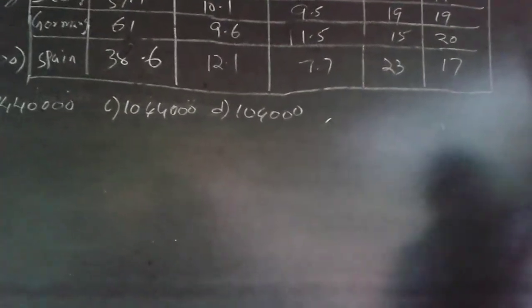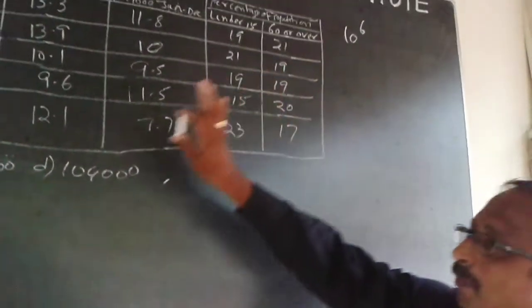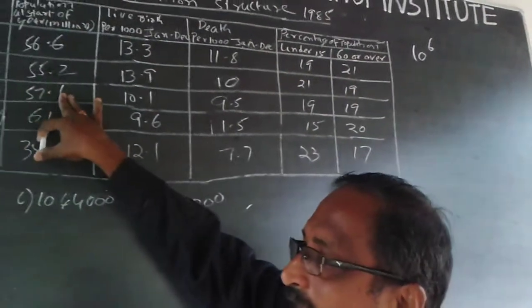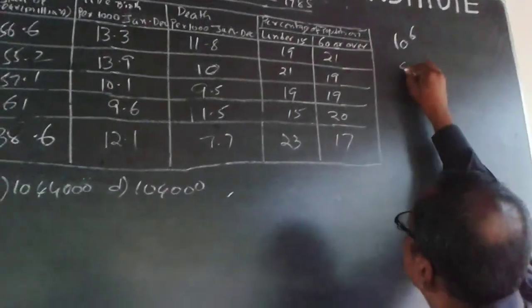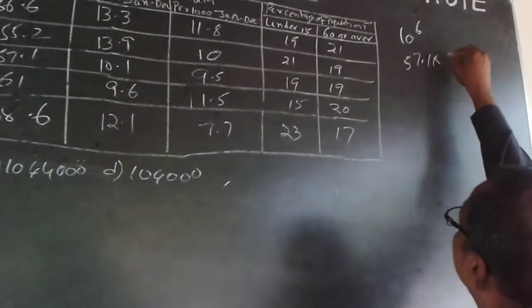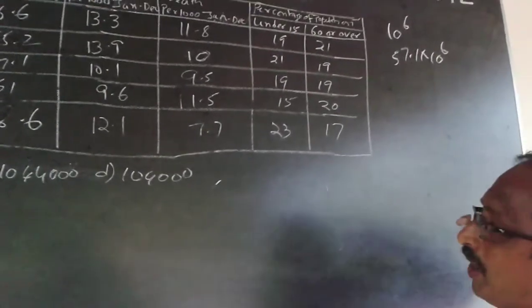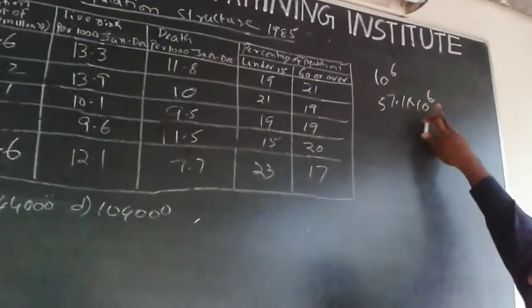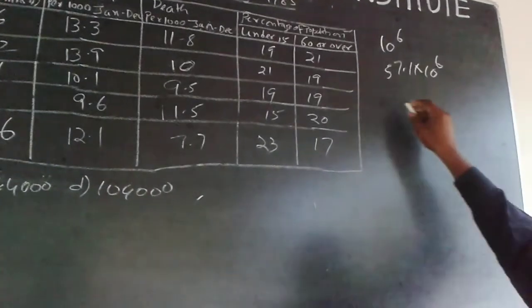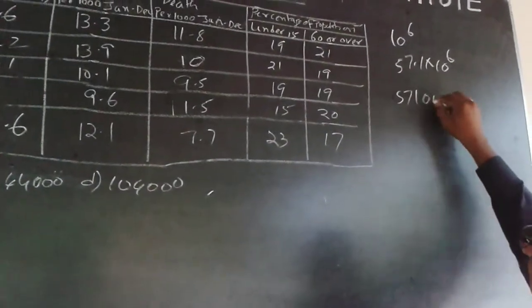Italy population is given as 57.1 million, so it will be 57.1 × 10⁶. For one decimal, one zero will go, then I'll have five more zeros, so it will be 571 and five zeros.